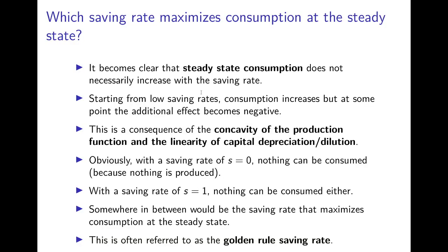To summarize: steady state consumption does not necessarily increase with the saving rate. If we have a low saving rate, consumption first increases with the saving rate, but at some point the additional positive effect becomes negative. The additional output produced with higher saving is more than offset by the additional capital depreciation and capital dilution. This is a consequence of the fact that the production function is concave but the capital depreciation and dilution line is linear.